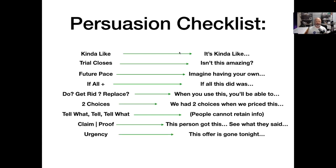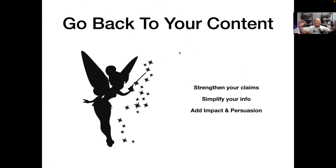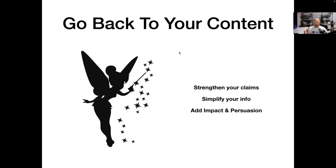Claim then proof. Urgency and scarcity — everyone knows about those. Now you're going to take that checklist, go back after you figure out the core parts of your content — the problem/discovery/solution — and sprinkle those persuasion tactics on top. Strengthen your claims, simplify your information, add impact where needed, and layer in persuasion where you need to drive things home. Don't start with the checklist — first figure out the stories you want to tell, tell the story, then go back and edit. Your brain needs to think divergently when creating; going back and editing is a separate process.